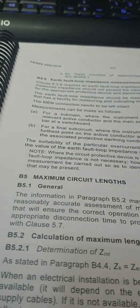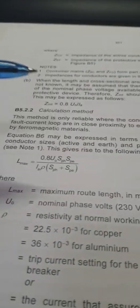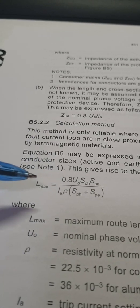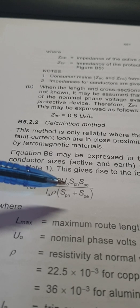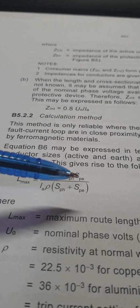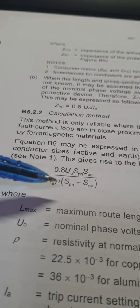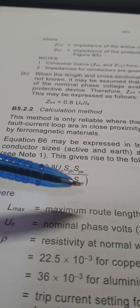If we turn over the page and have a look at the calculation, we're looking at maximum length B1, maximum circuit length. When we get to the actual formula, it's on B522 calculation. We have the calculation: L max equals 0.8 times voltage times the largest active times the largest earth, and then IA times P times SPH plus SPE.